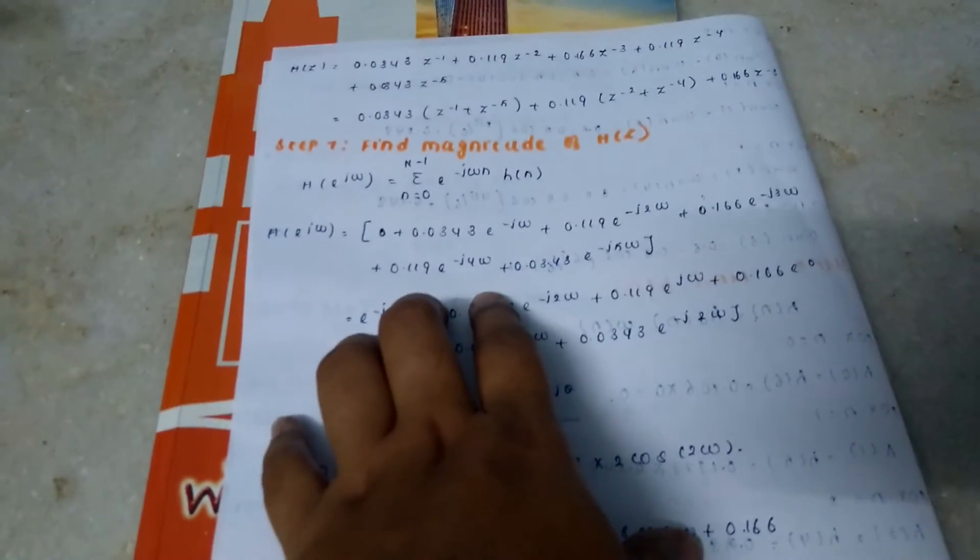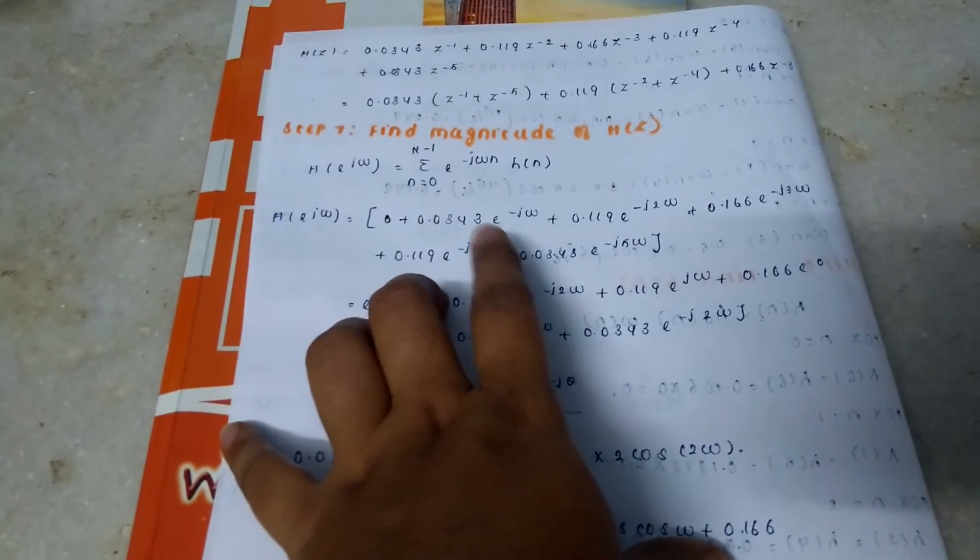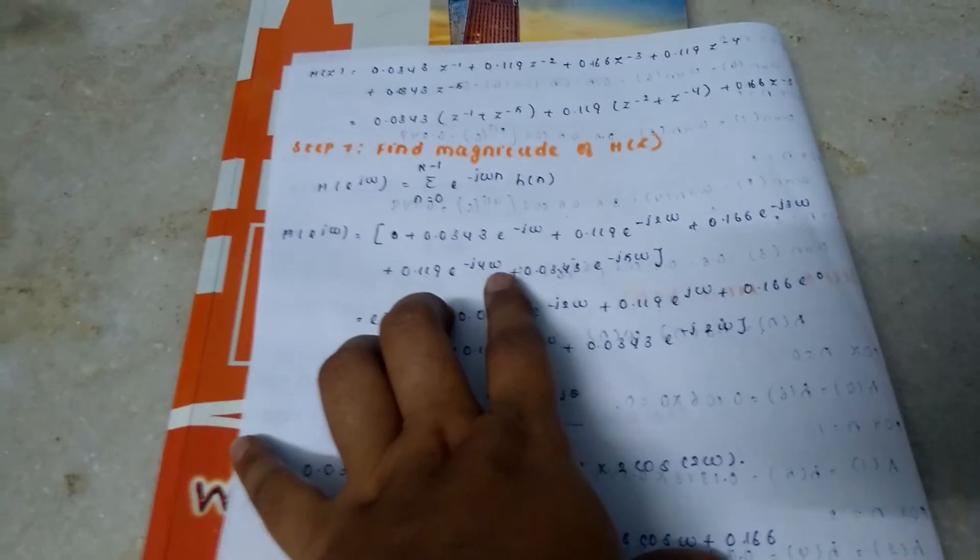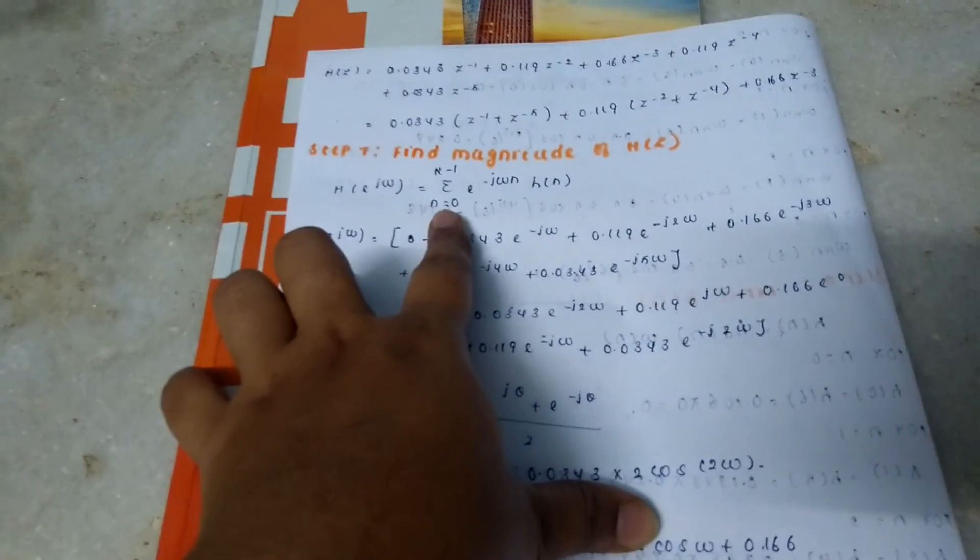At step 7, find the magnitude of h(z). Here we can use two methods to find your h(z), and here I used this common formula method.